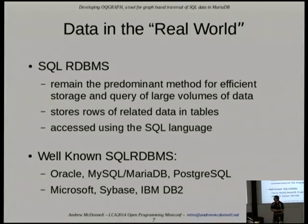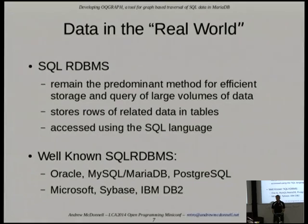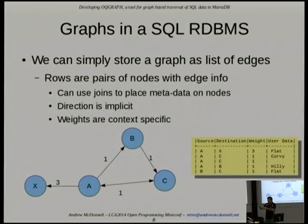Today I'll be talking about our Open Query Graph (OQ Graph) tool, which is a plugin for MariaDB. MariaDB was a fork of MySQL because MySQL was taken over by Oracle and a lot of people were worried about that. So they forked it and made a community version, and now it's appearing in distributions — it's almost in Debian.